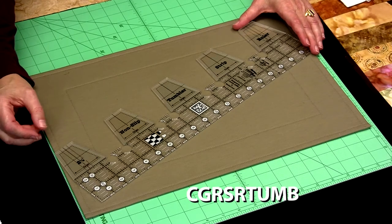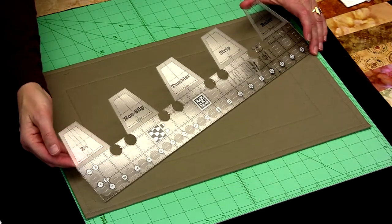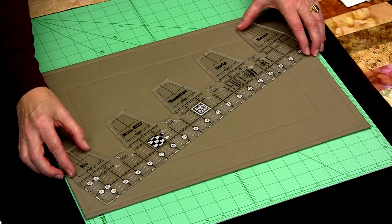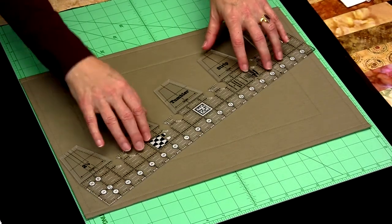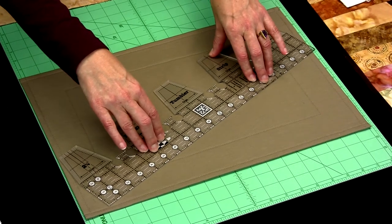As with all Creative Grid Rulers, we have the embedded grip on the back that will help hold your ruler still. When you want it to be still, move when you want it to move. When you put pressure on it, that ruler's going to stay.